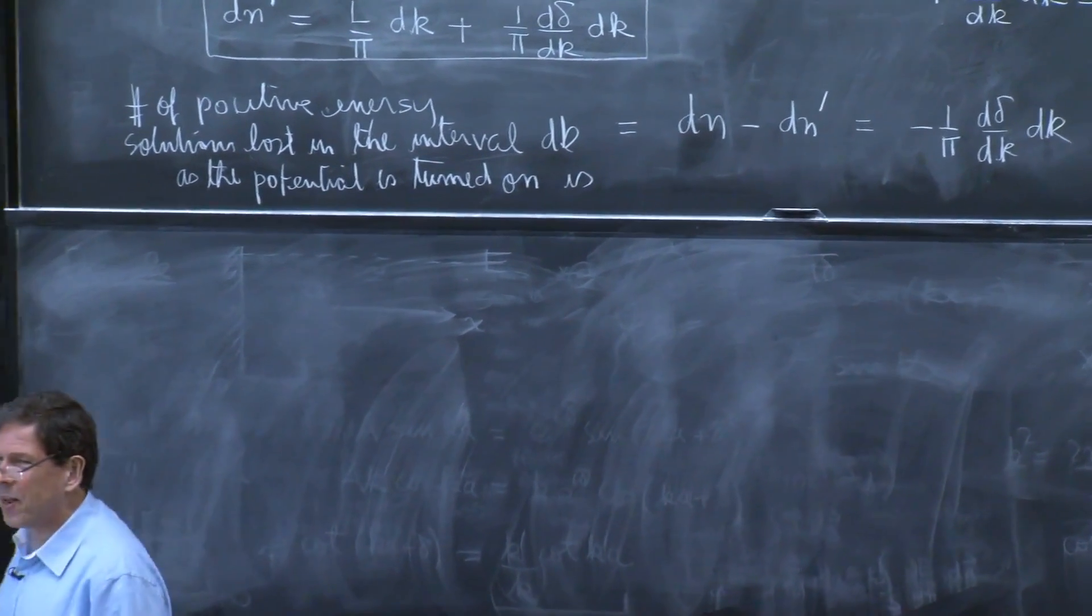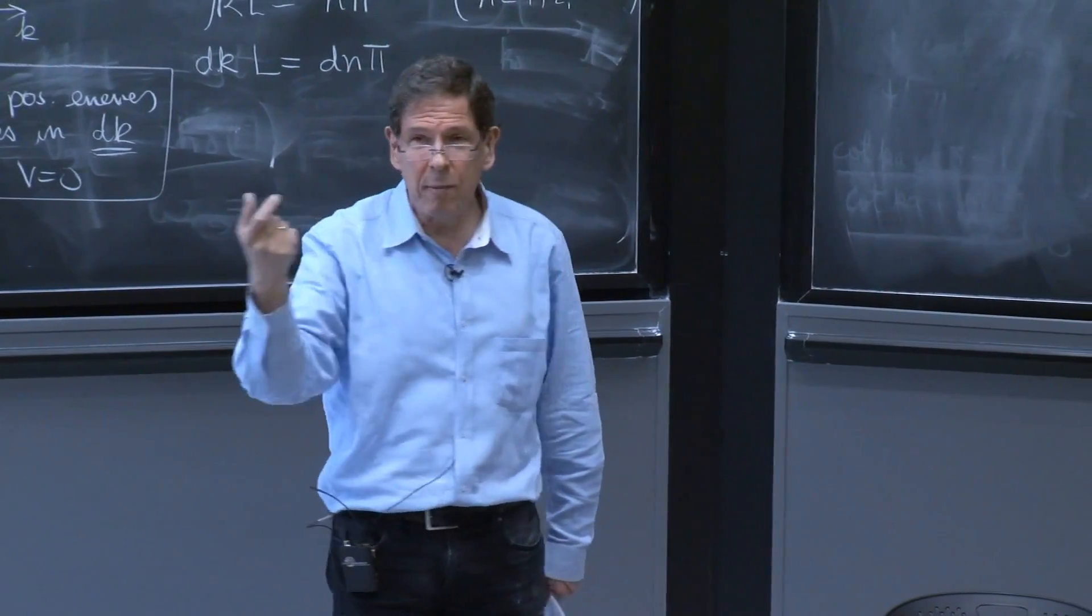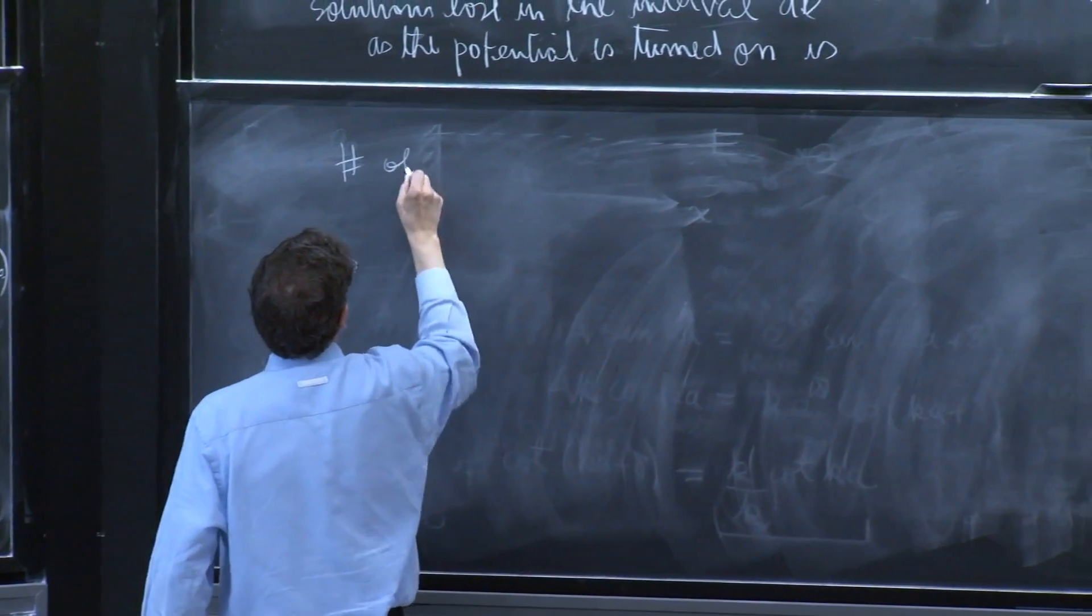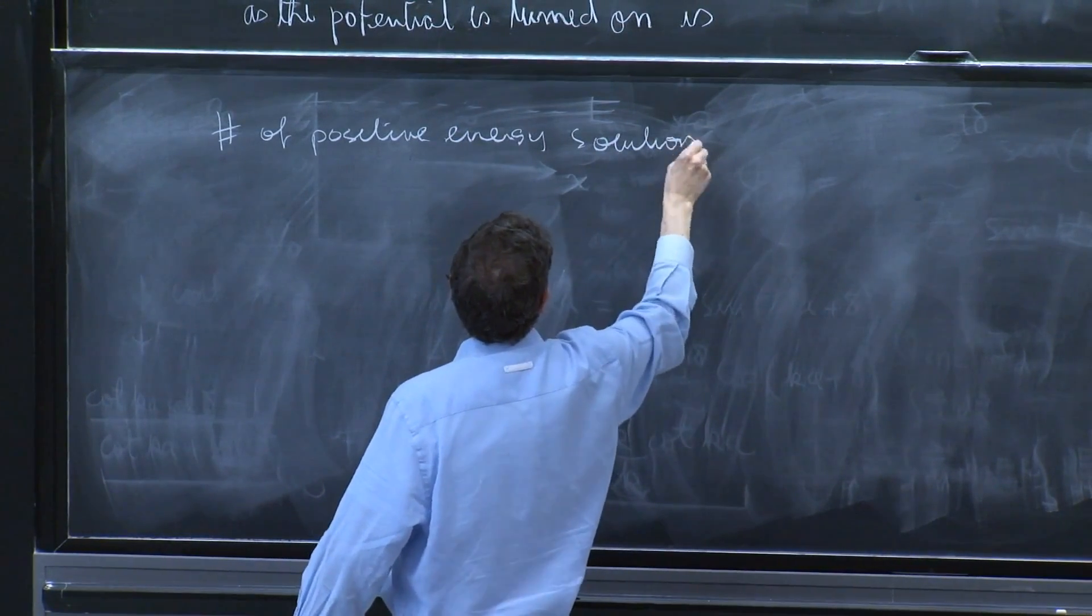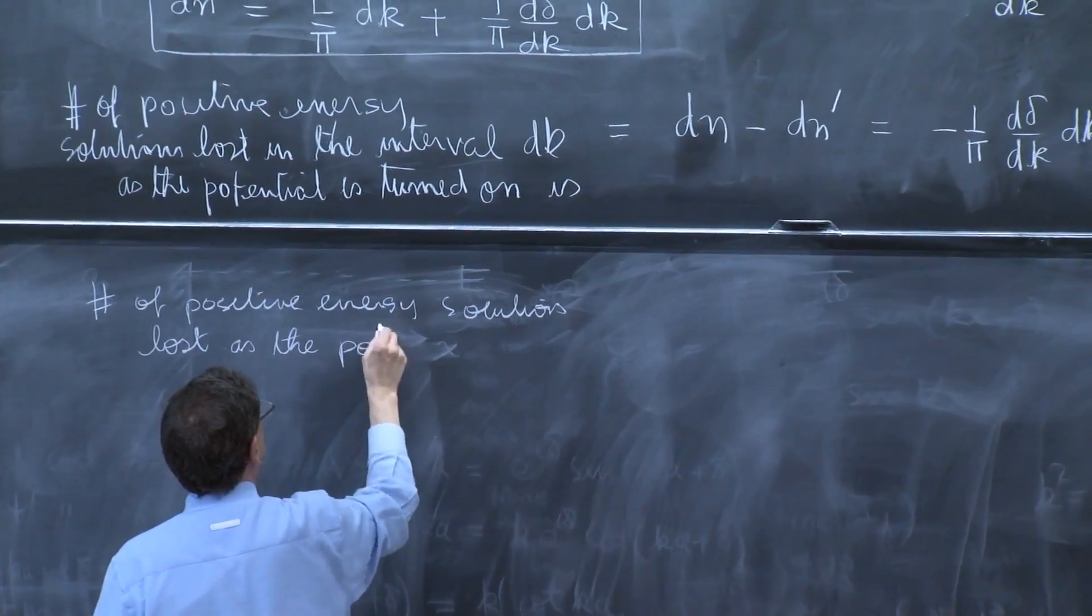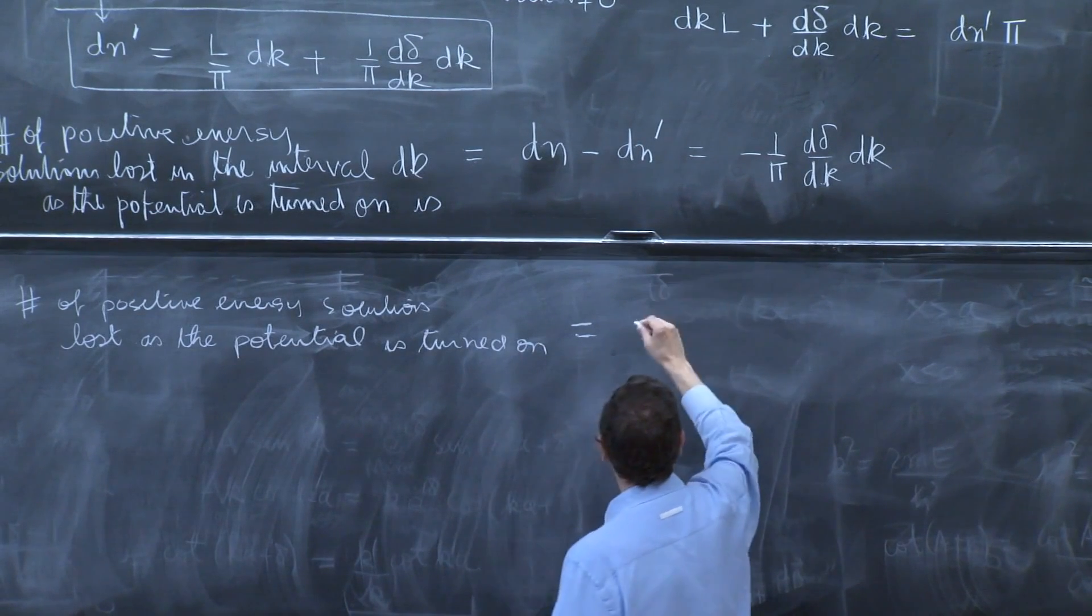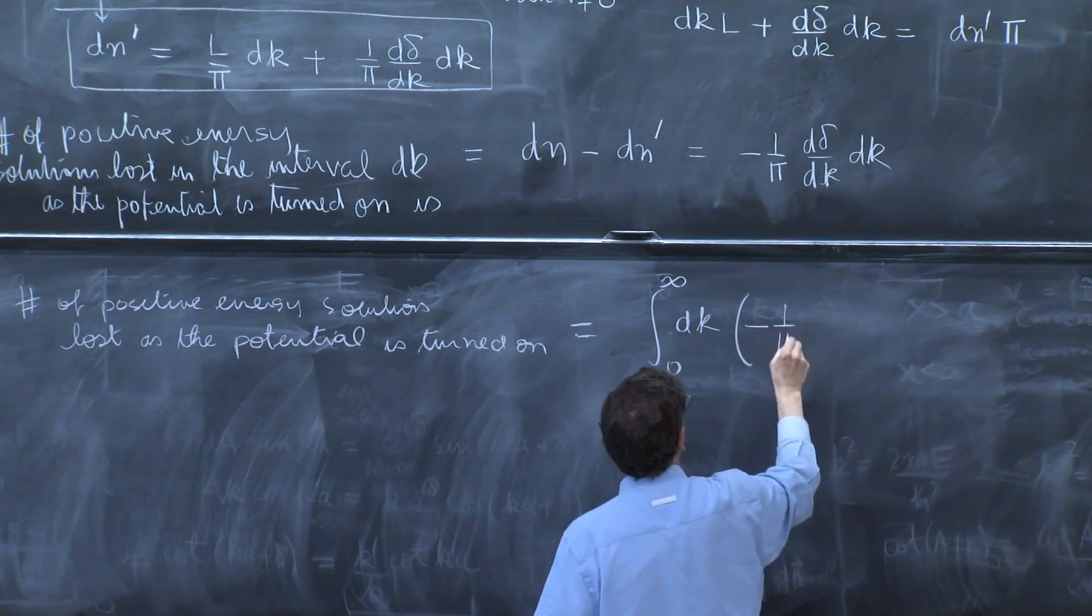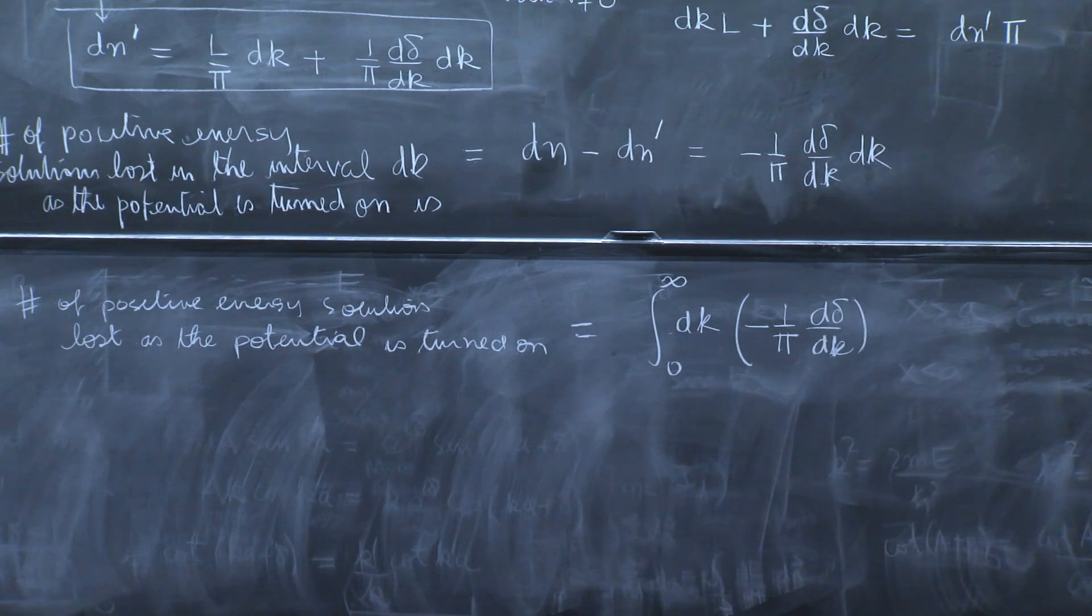This is what you lost, the number of positive energy states that you lost in little dk. To see how many positive energy states you lost overall, you must integrate over all the dk's and see how much you lost in every little piece. So the number of positive energy solutions lost as the potential is turned on is equal to the integral over k from 0 to infinity of minus 1 over pi d delta dk.